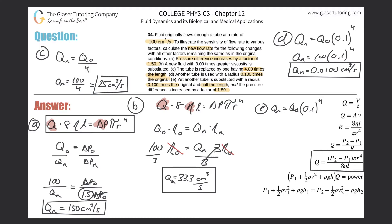So if I divide by one half, that would be the equivalent of increasing Q by two. Notice how the length is in the denominator — that's what I'm plugging in as the change.